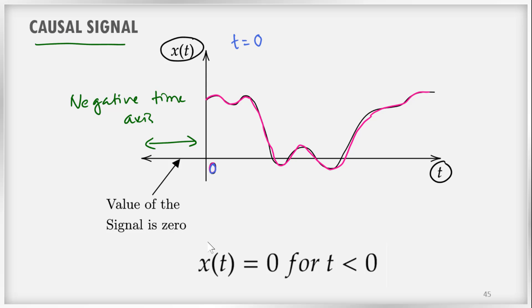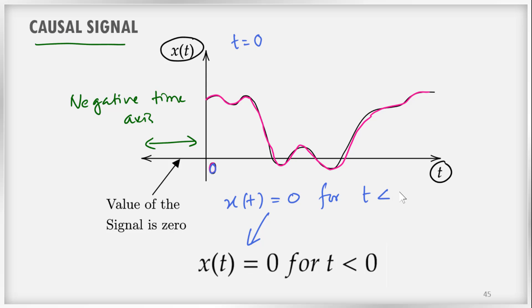The signal can be mathematically expressed as: x(t) = 0 for t less than 0. For the negative axis of the time the signal does not exist, so x(t) = 0 for t less than 0.